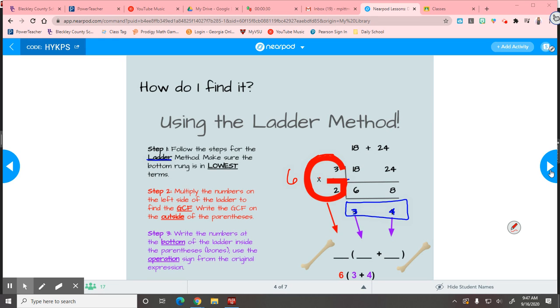So here's the next step. Step 3. This is where we get to the distributive property. Basically, we write the numbers at the bottom of the ladder inside the parentheses or the bones and use the operation sign from the original expression. So what that means is you would draw the bones. You would draw a line, parentheses, line, whatever operation sign there is. Since we're adding, we put addition. If we were subtracting, what would go in the operation blank? Subtraction. Line, close the parentheses. Now all we do is fill in the numbers. We put in the GCF for the first blank. We drop the 3 down. We drop the 4 down. And we're done.